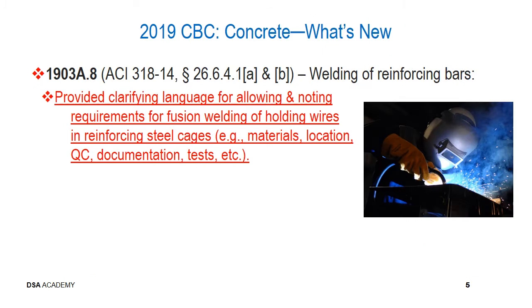Regarding concrete and welding of reinforcing wires in section 1903A.8, which references ACI 318.14 — the same standard as the 2016 code — in sections 26.6.4.1A and B, there's been clarifying language for allowing and noting requirements for fusion welding of holding wires and reinforcing steel cages that have become more common. This relates to the particular materials that must be specified, their locations on the cage, bend locations, quality control requirements, and documentation and tests for these pencil rods or holding wires.